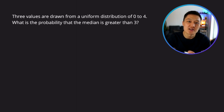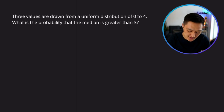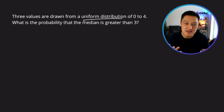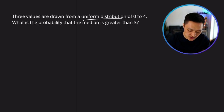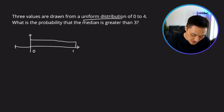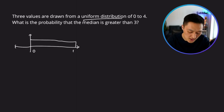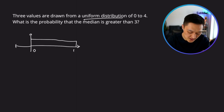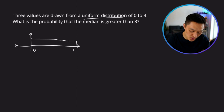We want to start by deconstructing this problem. First of all, we have to recognize what the uniform distribution is. The default uniform distribution has a bound from zero to one. On a continuous number range of zero to one, if you were to randomly draw a value from this uniform distribution, the value is going to lie between zero and one.